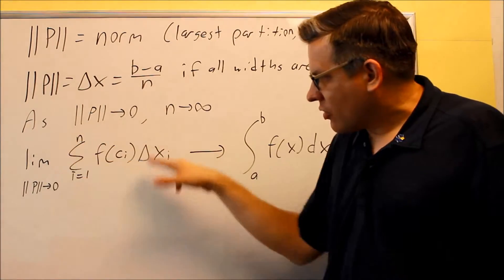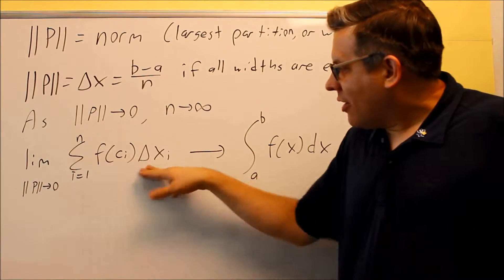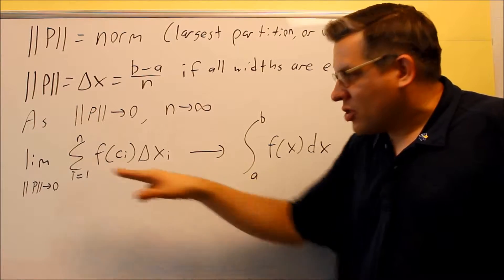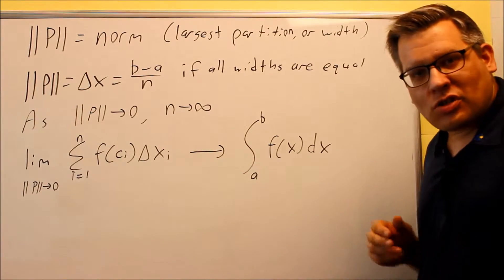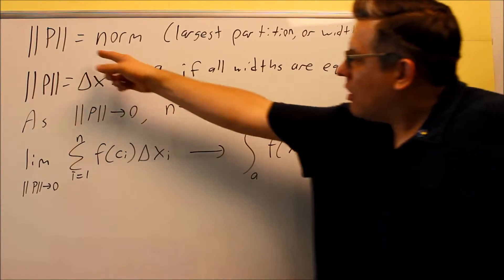Kind of had a notation that looked like this. You're taking the area of each rectangle individually, you're adding them all together. Now normally I would have an n here, but in this section we're introducing a new notation.